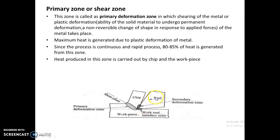Whenever the tool comes in contact with the workpiece — that is, when the tool moves against the surface of the workpiece — it removes the workpiece by a shearing process, a metal shearing process. The zone where the workpiece and cutting tool edge interact is defined as the primary zone or shear zone.